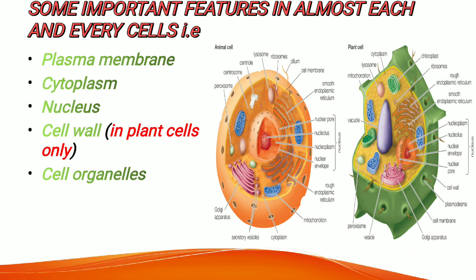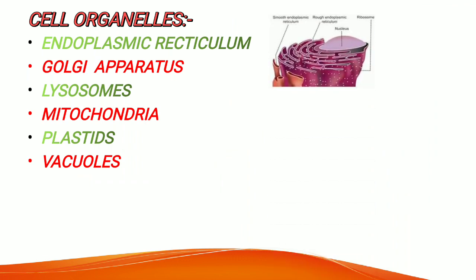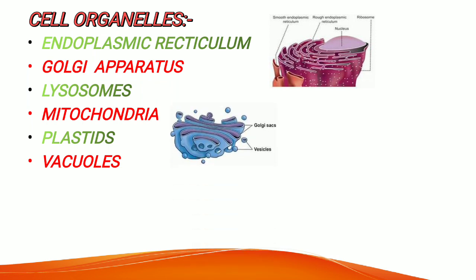The cell organelles we will deal with in Class 9 Biology are endoplasmic reticulum, Golgi apparatus, lysosomes, mitochondria, plastids, and vacuoles. The endoplasmic reticulum is an important organelle in all eukaryotic cells; it plays a major role in the production, processing, and transport of proteins and lipids. The Golgi apparatus, also known as Golgi complex or Golgi body, is found mostly in eukaryotic cells and is helpful in the modification of lipids and proteins.